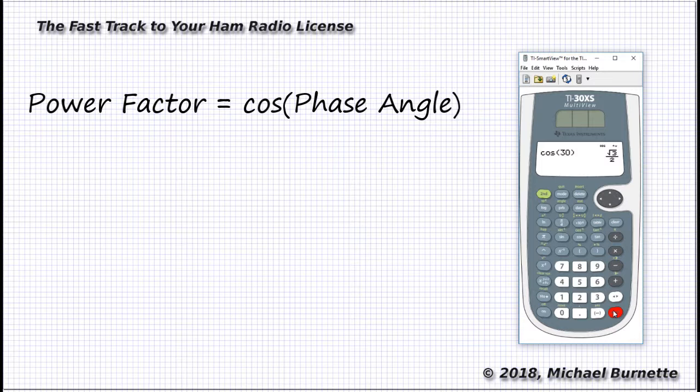Unfortunately, if you did what I just did, and just enter 30 for the phase angle, the 30XS will tell you the answer is the square root of three over two. Which is perfectly accurate, and perfectly useless for the exam.